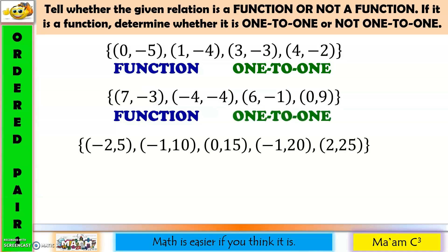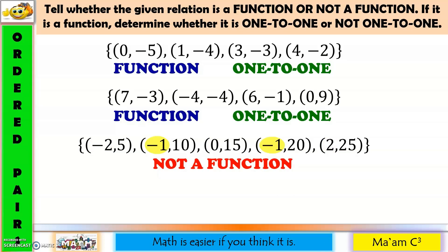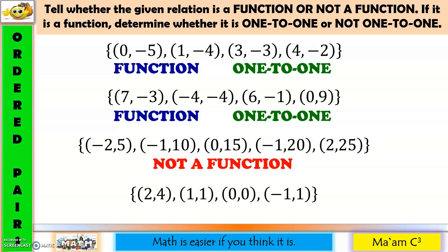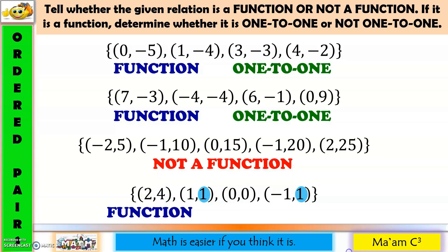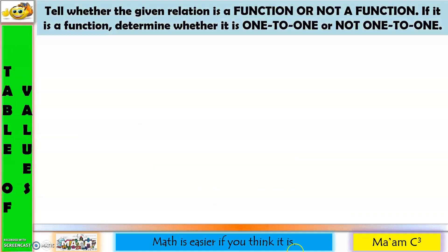Another one. X values are negative 2, negative 1, 0, negative 1, positive 2. Is there any x value that has been repeated? Yes, that is negative 1. Therefore, this is not a function. If it is not a function, it cannot be a one-to-one function or not one-to-one. Last one. X values are 2, 1, 0, and negative 1. Is there any x value repeated? None. Therefore, this is a function. Y values: 4, 1, 0, and 1. Is there any y value repeated? Yes, that is 1. Therefore, this is a function but not one-to-one.